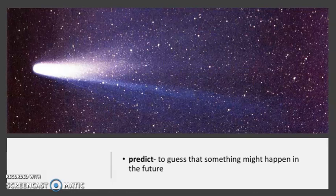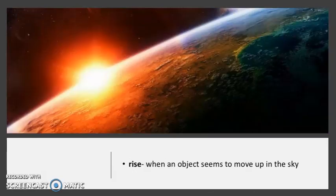Predict means to guess that something might happen in the future. We can even predict meteor showers and comets that fly by Earth, like Halley's Comet — the most famous comet shown here in the photo. Halley's Comet flies by Earth every 75 years, and the next time it will pass Earth will be in 2061. What can you predict will happen tomorrow based on your observations of the sun's movements today? Good prediction, Susie — the sun follows the same pattern each day, so there's a very good chance its movements will be the same tomorrow.